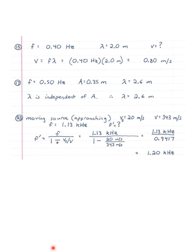Number 15 says a water wave has a frequency of 0.40 hertz and wavelength of 2 meters. Its speed is what? There's the frequency, there's the wavelength, and we're going to use the equation that speed for a wave is frequency times wavelength: 0.40 hertz — remember that hertz has units of cycles per second — times 2 meters, giving us units of meters per second. We get 0.80 meters per second.